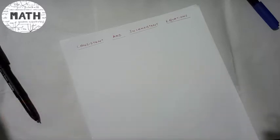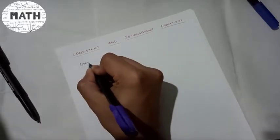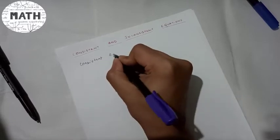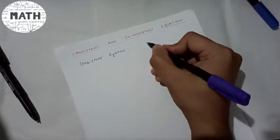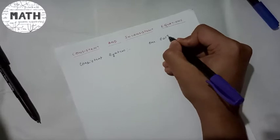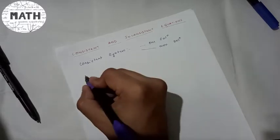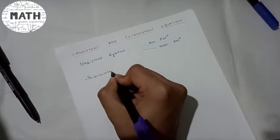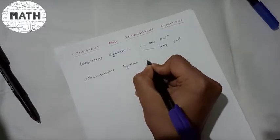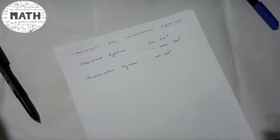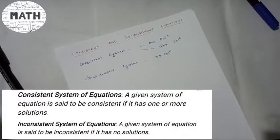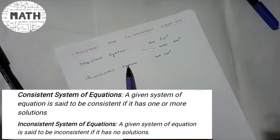Under this topic, the first thing is consistent and inconsistent equations. A consistent system is one containing one solution or more than one solution — in short, there should be at least one solution. For an inconsistent system, the equation should have no solution. So for a consistent system, there may be one or more than one solution, and for an inconsistent system, there is no solution.